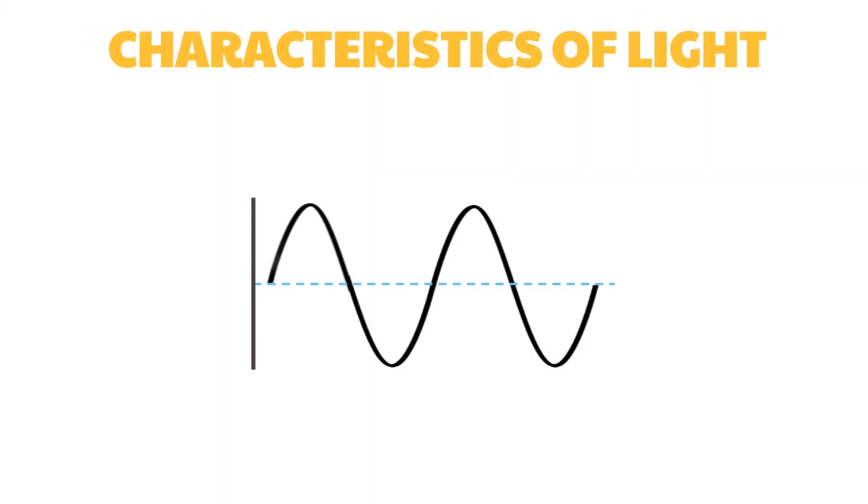Light is a form of energy that travels in electromagnetic waves. It behaves like a wave. Thus, it also has a wavelength, amplitude, wave speed, and frequency.